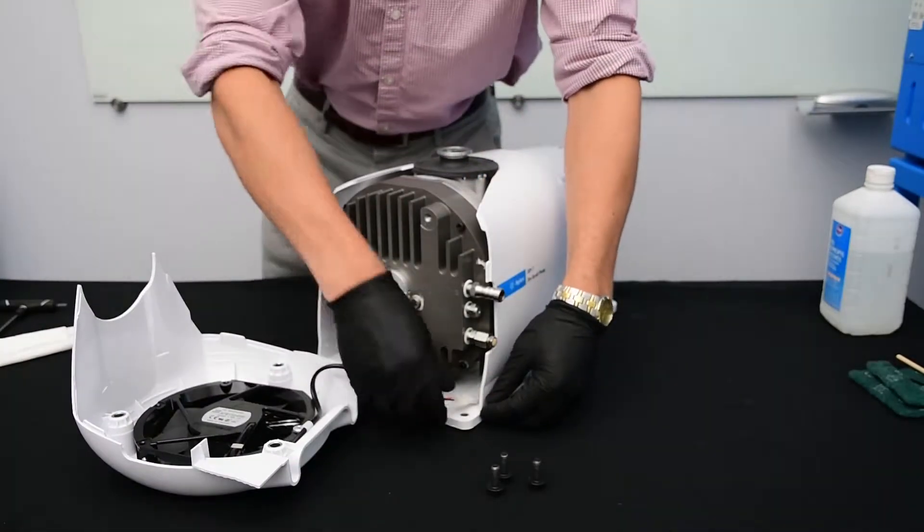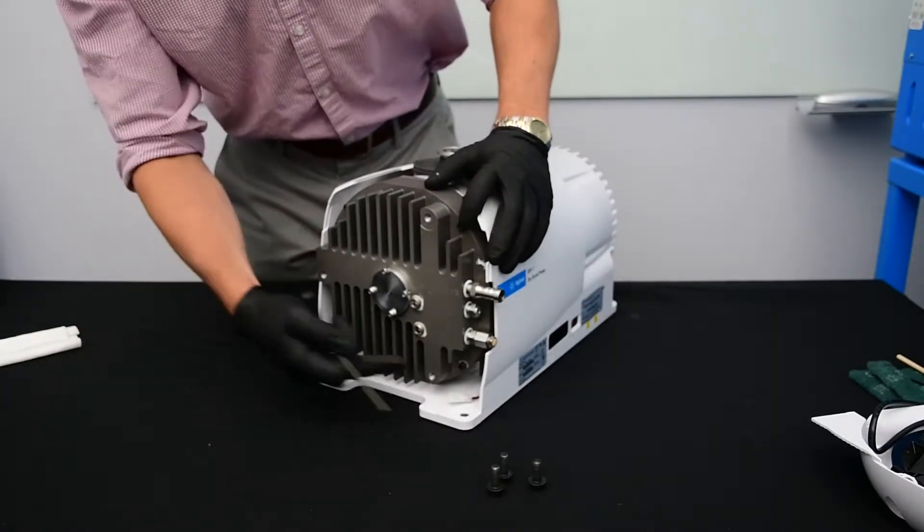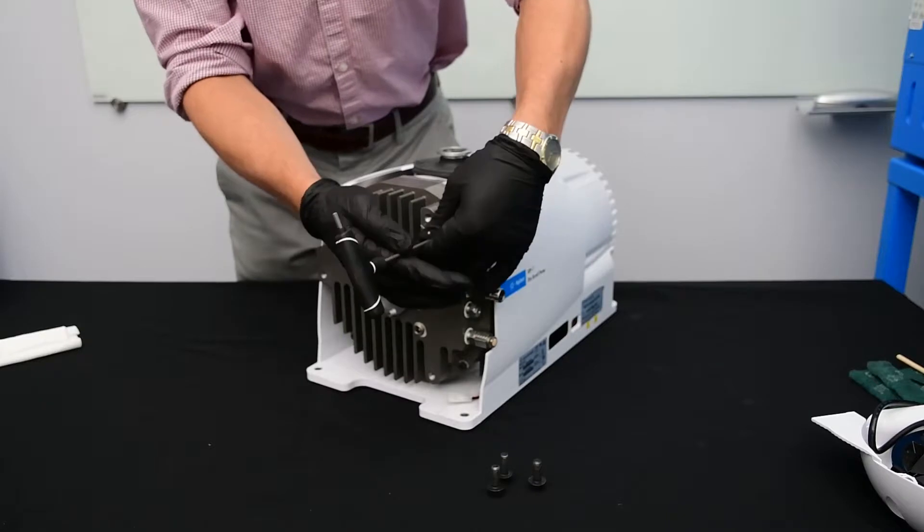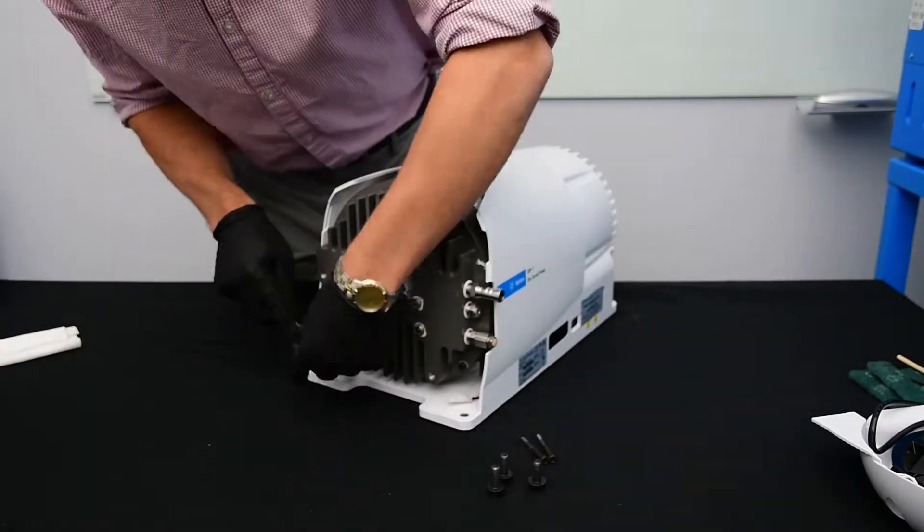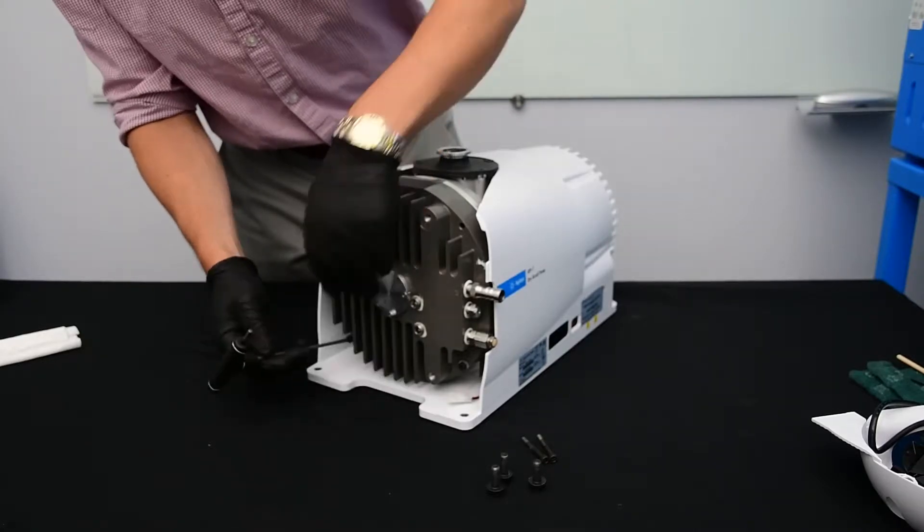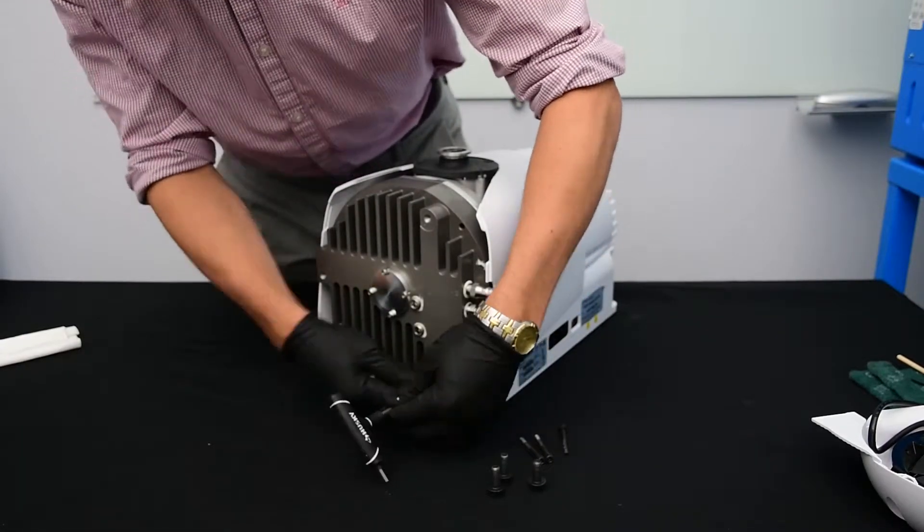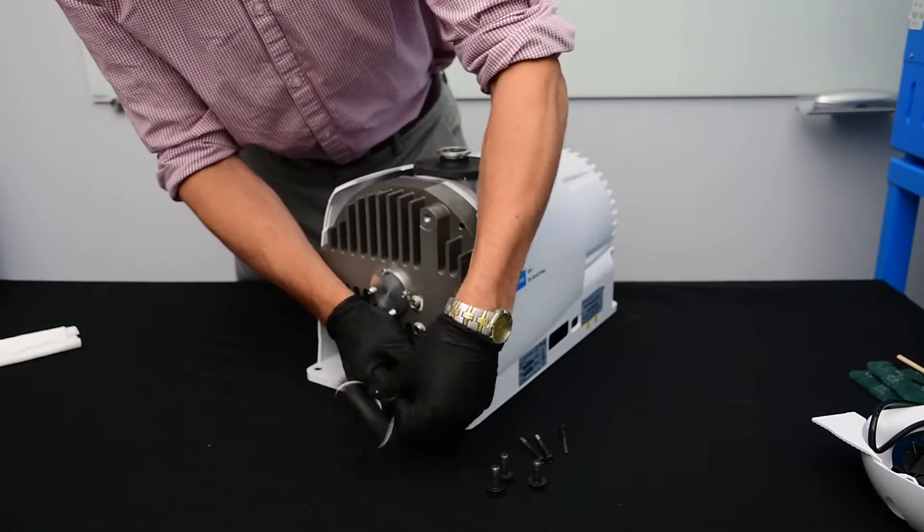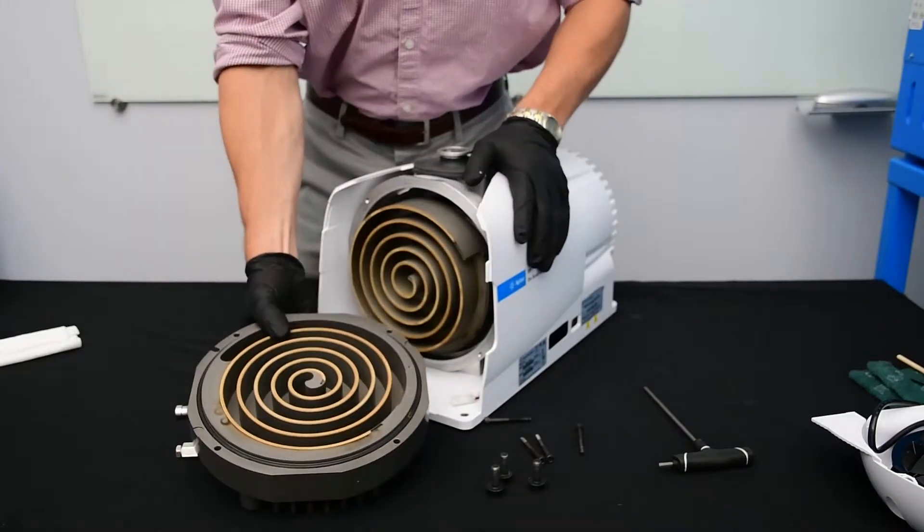We'll remove the cowling and disconnect the connection for the fan. Now we've removed the cowling, we'll remove the four 4mm Allen screws. We'll remove the cowling.